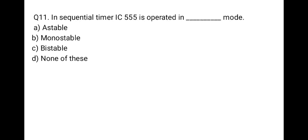The next question: in a sequential timer, IC 555 is operated in which mode? Options: astable, monostable, bistable, or none of these. The correct answer is monostable — in a sequential timer, IC 555 is operated in monostable mode.